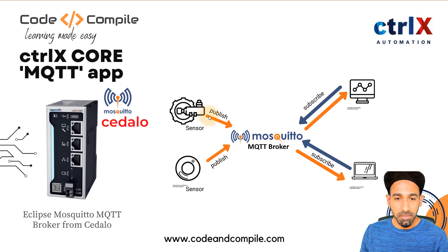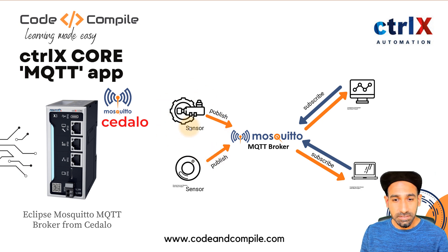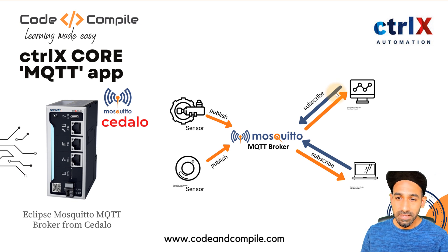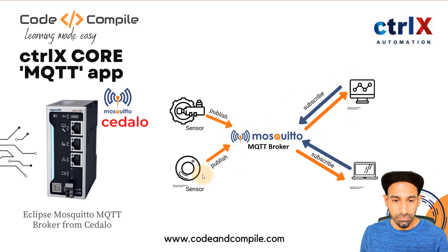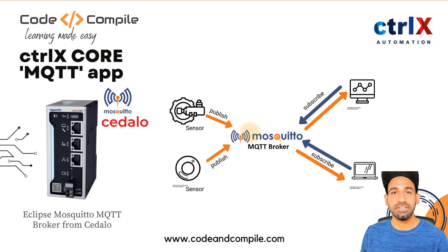And then we have some publishers and subscribers. The broker collects data from the publishers — we have some sensors which are publishing data, so the data goes from the sensor to the broker. Then we have subscribers, who want to read this data. A subscriber can subscribe to whichever data they want to read — one subscriber can read multiple data, or can subscribe to just one. To publish and subscribe data, we need a specific topic, which is what we publish and subscribe on.